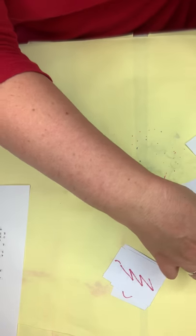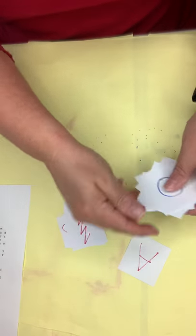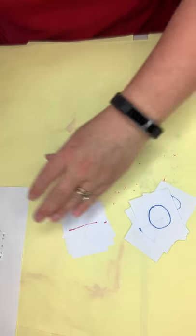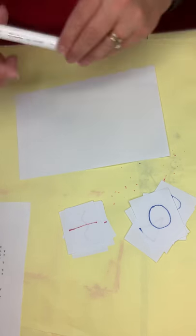So now I have my shapes and I have my lines. I'm just going to shuffle them up a little bit. I'm going to leave them face down and I'm going to get out my piece of paper.